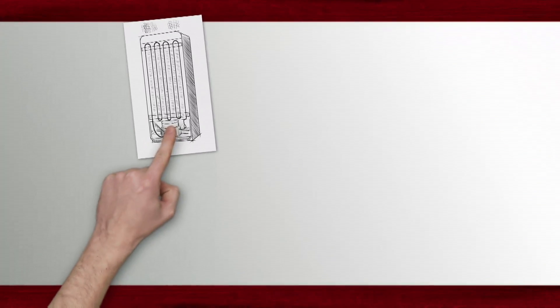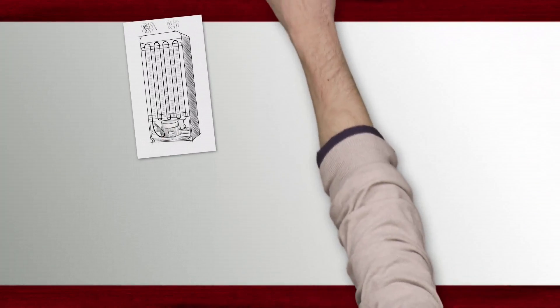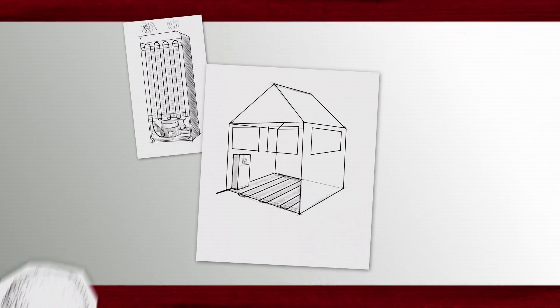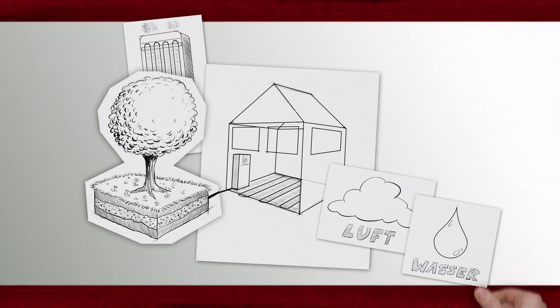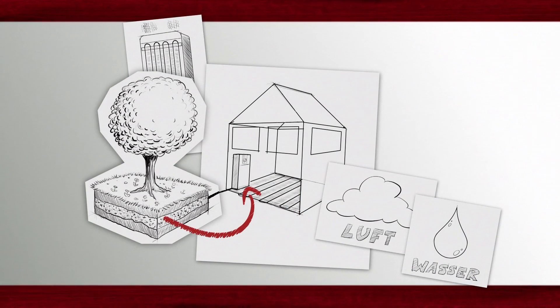Now imagine that the heat exchanger is underfloor heating and the heat pump removes stored solar energy from the soil, the air or the groundwater and transmits it to the heating system in the house.